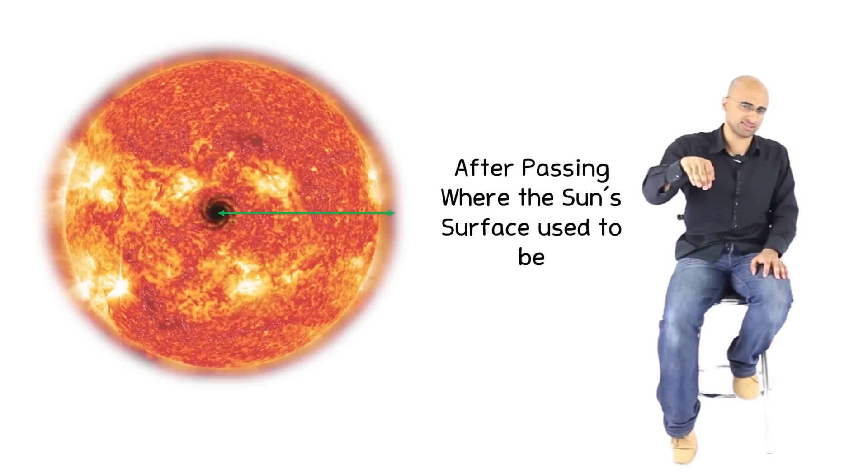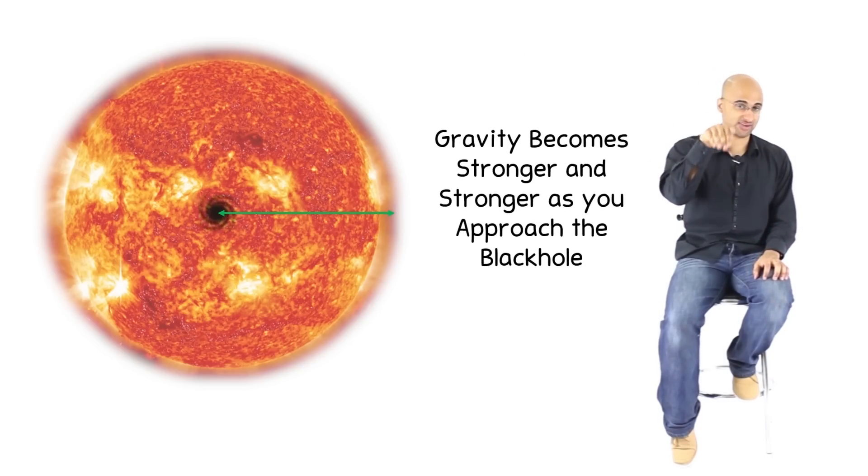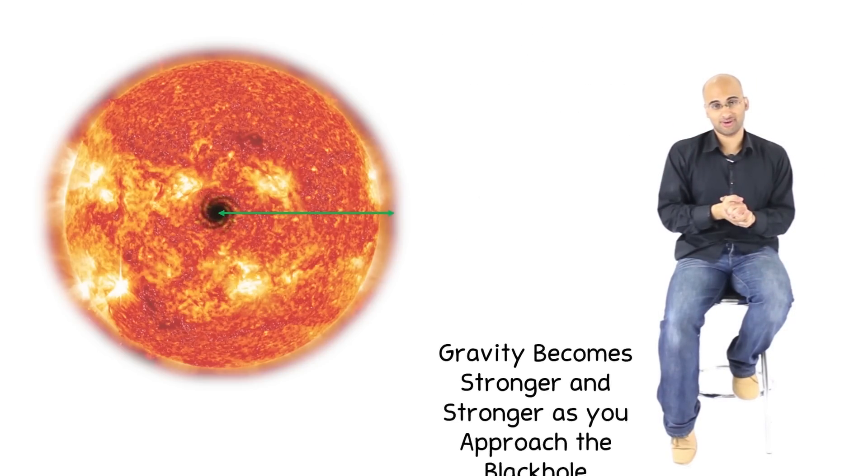You see, when the sun collapses into a black hole, it still maintains the same mass that it had before it collapsed - one solar mass. Therefore, the black hole will exert the same amount of gravity that the sun is exerting. Therefore, you're not going to feel any difference. There's not going to be much change. What will change is that as you get nearer and nearer to the black hole, you will feel stronger and stronger gravity until you get to the event horizon itself. But besides that, you'll be absolutely fine.